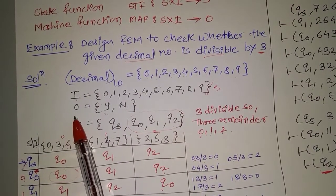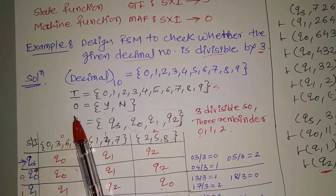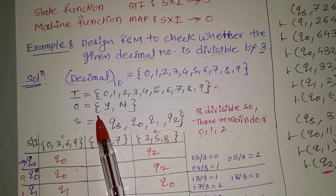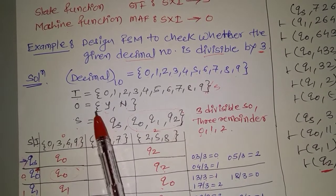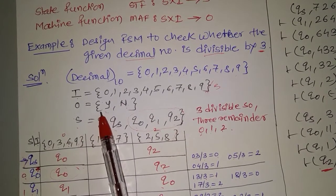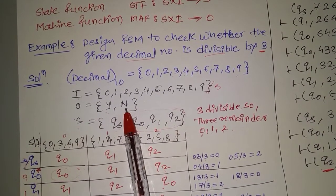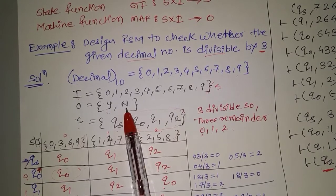O means output, so the output is yes or no. Yes means accepted — yes, divisible by 3. No means not accepted — it is not divisible by 3.